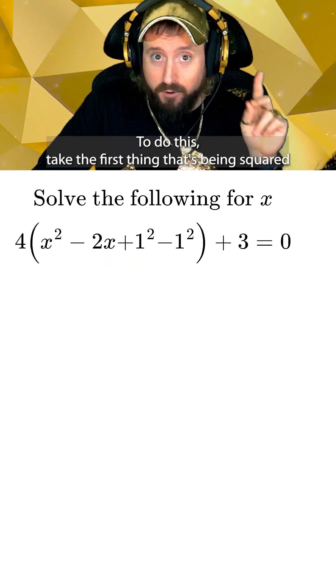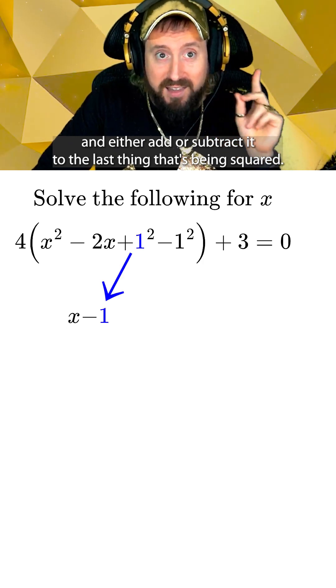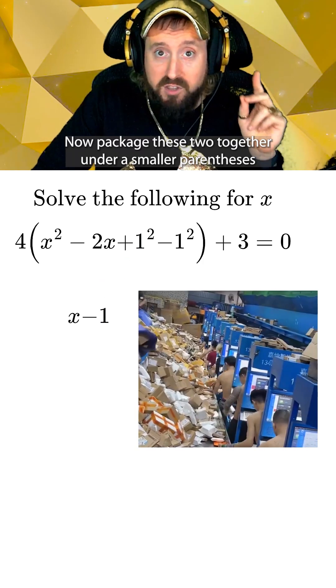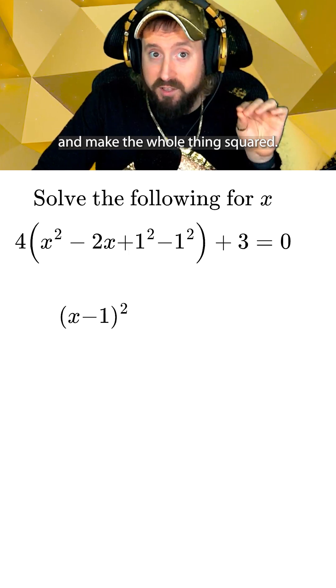To do this, take the first thing that's being squared and either add or subtract it to the last thing that's being squared. Now package these two together under a smaller parentheses and make the whole thing squared.